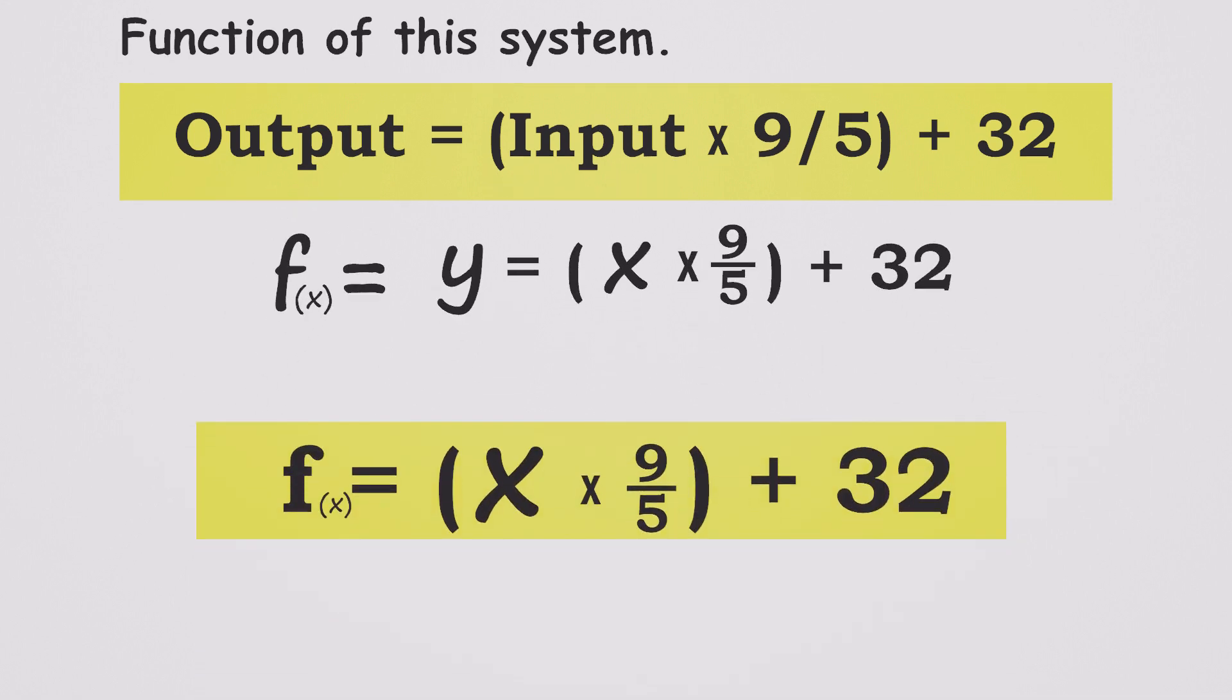When we encounter the notation f(x), it signifies the name of the function, which is f, and the input to that function represented as X. So f of x is how we read it.